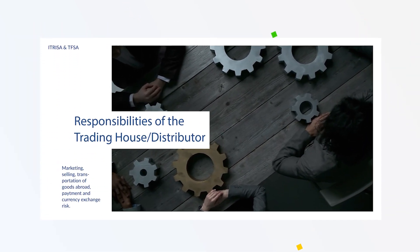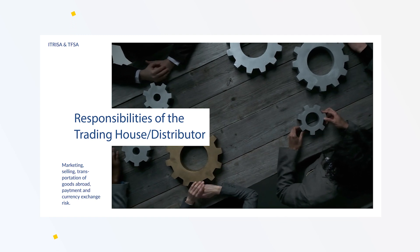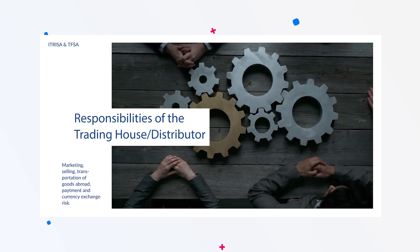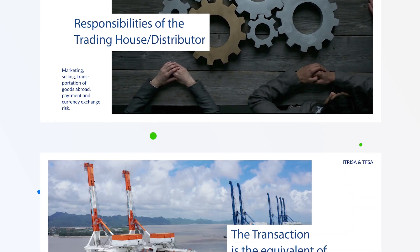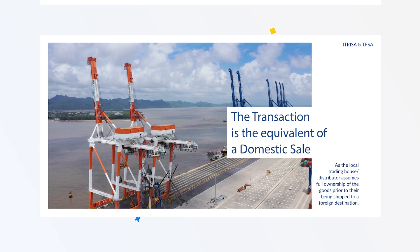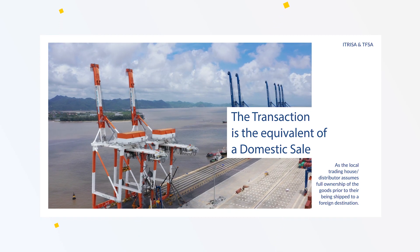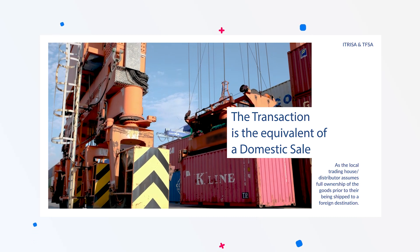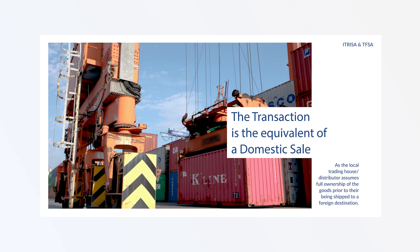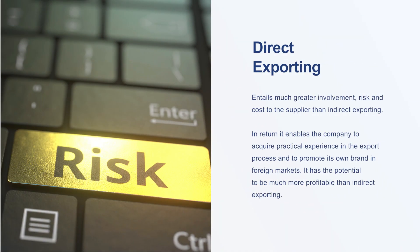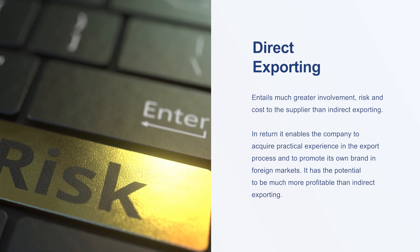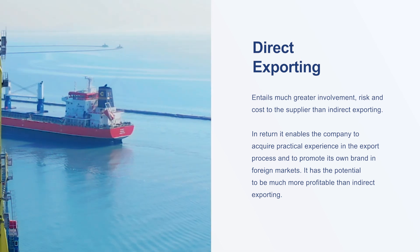The trading household distributor, which in turn on-sells the product to customers in foreign markets, shoulders the responsibility for marketing, selling, and transporting the goods abroad. It also carries any payment and currency exchange risk. As the local trading household distributor assumes full ownership of the goods prior to their being shipped to a foreign destination, the transaction for the exporting company is the equivalent of a domestic sale.